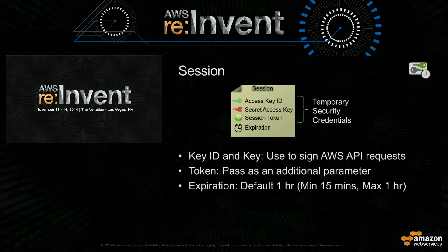However, when you make an AssumeRole API call and get back the sessions, those are temporary. For the AssumeRole API, by default the session is going to be valid for one hour. But you can change it so that it can be valid only for 15 minutes. The max is also one hour.